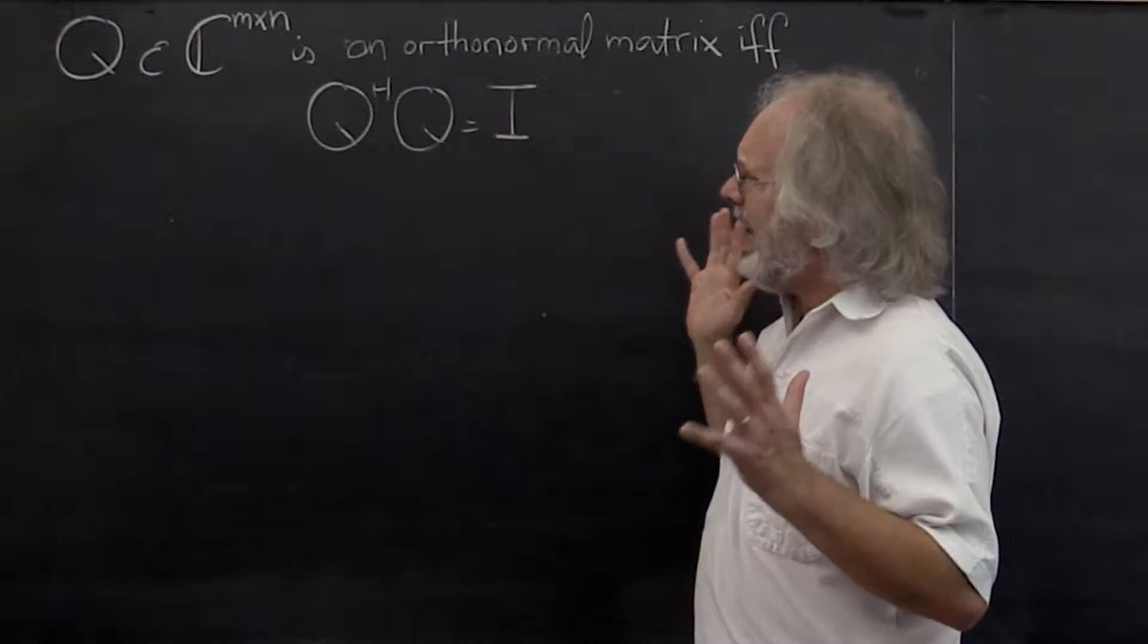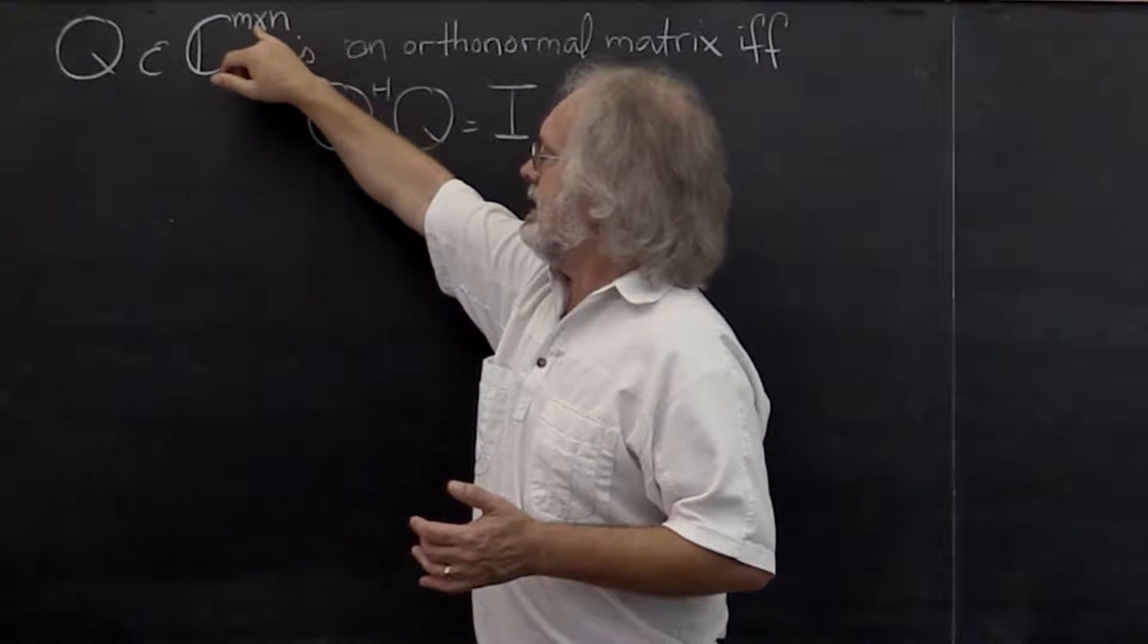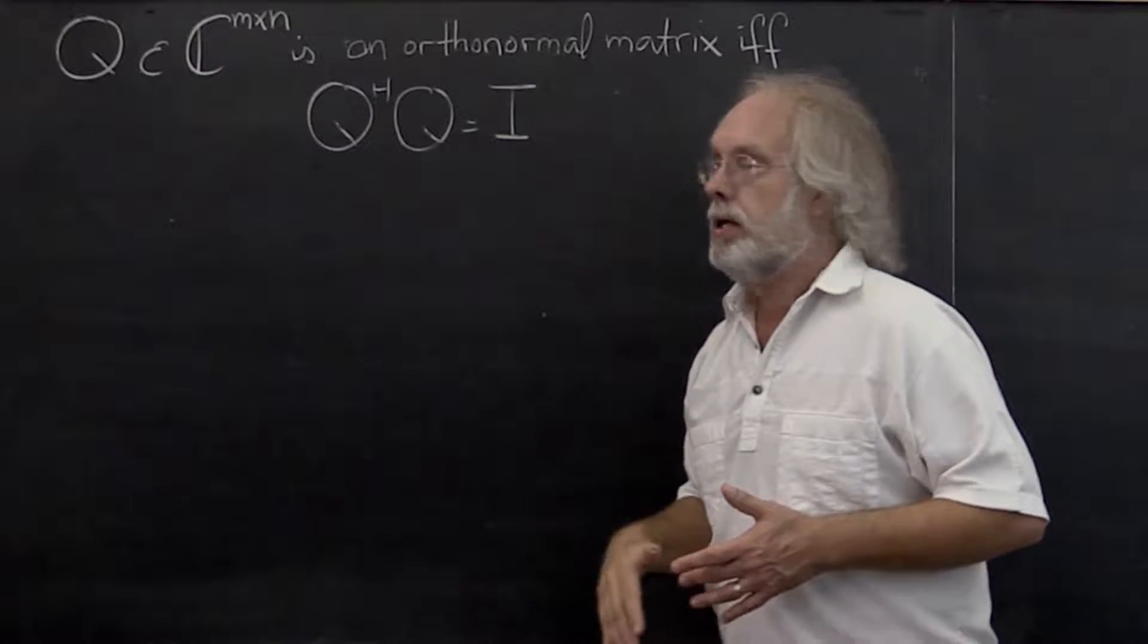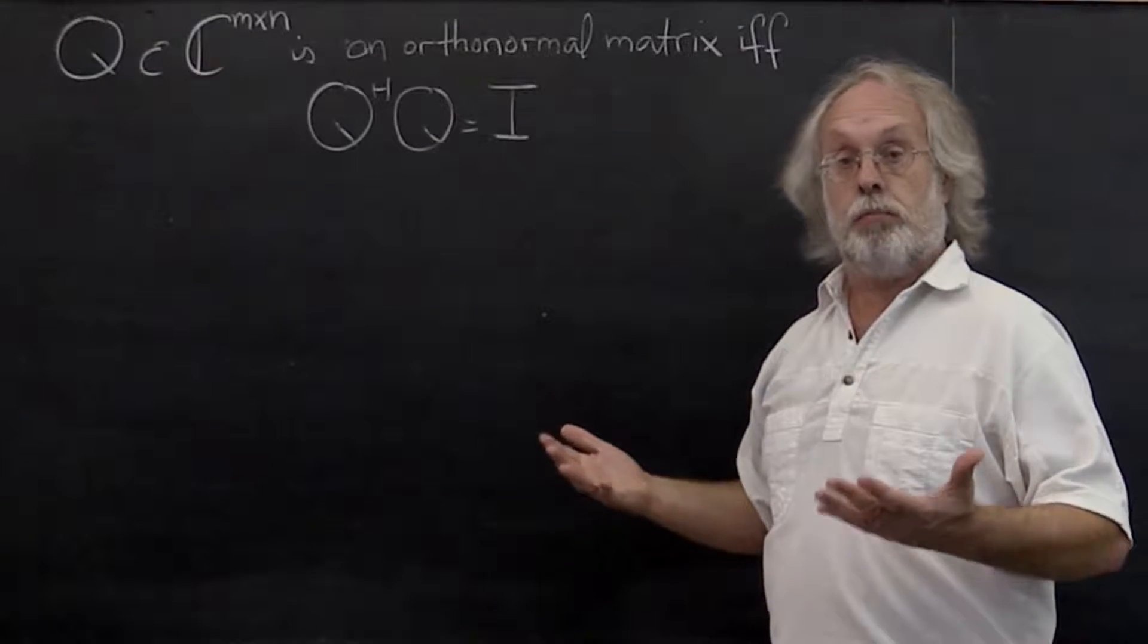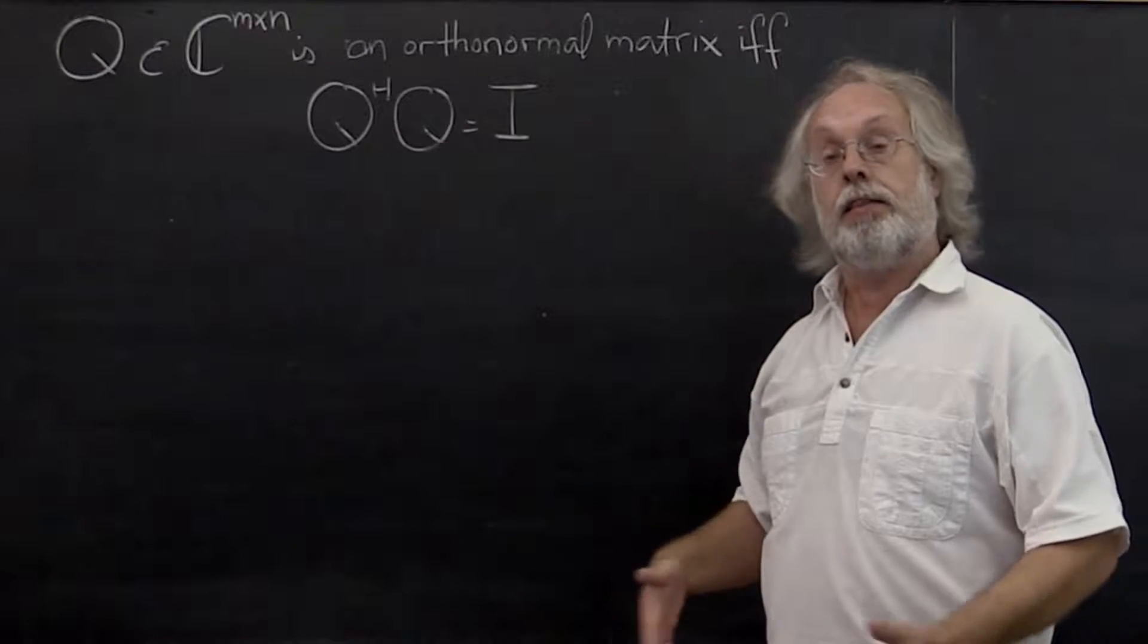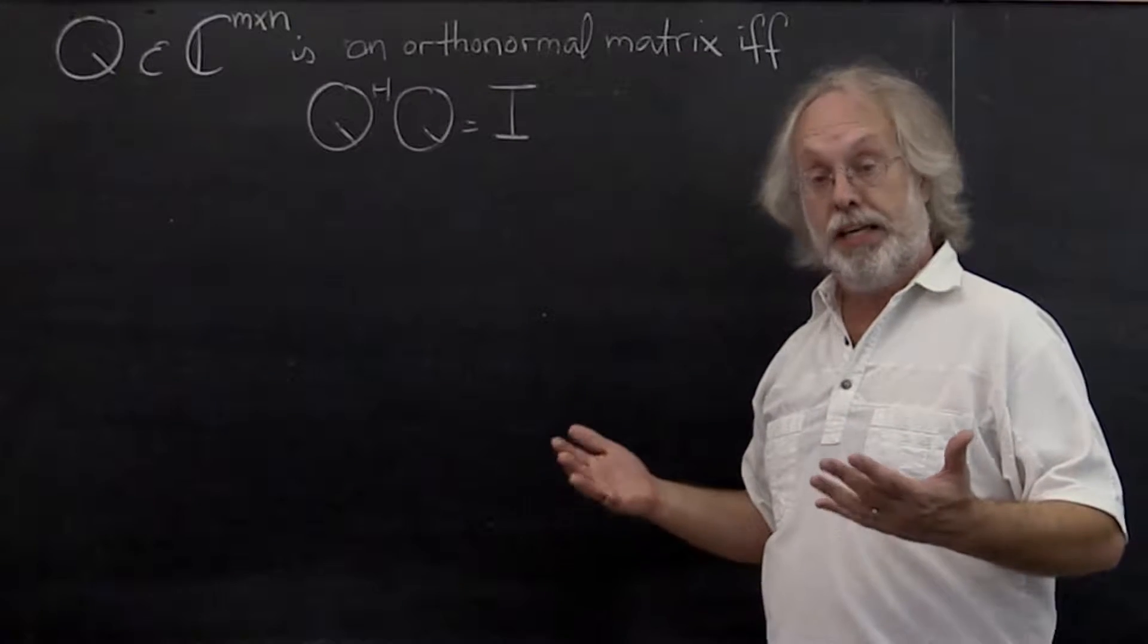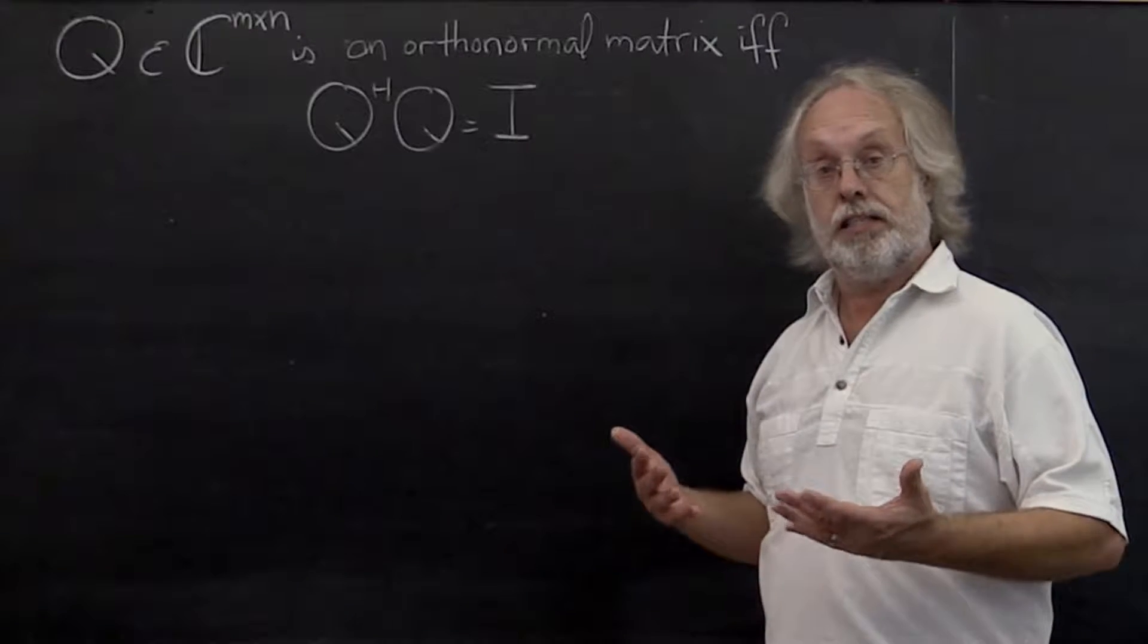Now inherent, therefore, n is less than or equal to m because the columns of an orthonormal matrix are mutually orthogonal. Therefore they are linearly independent, and you can only have at most m linearly independent vectors of size m.